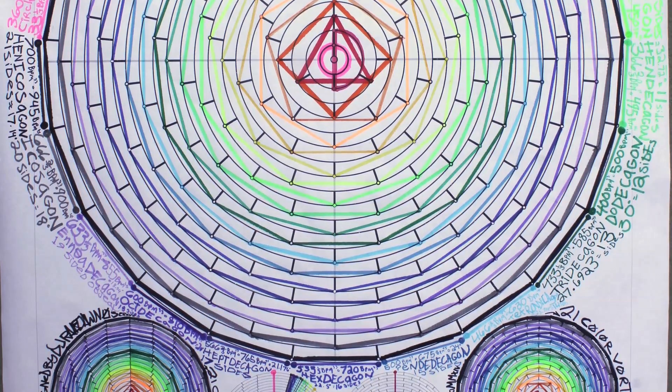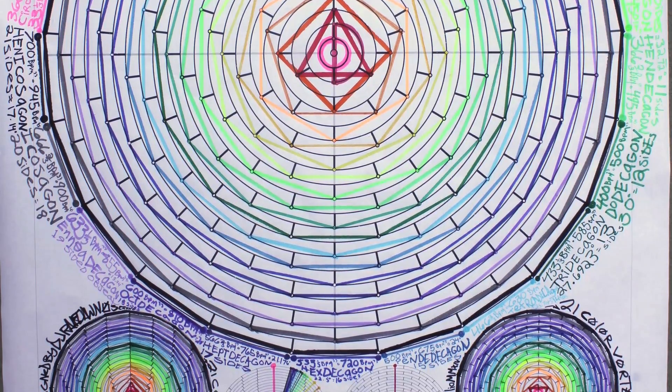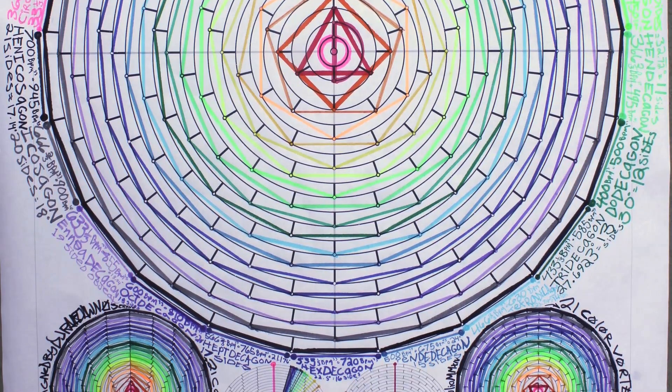21 Henicosagon equals 945 BPM at 45, equals 700 BPM at 33.3.